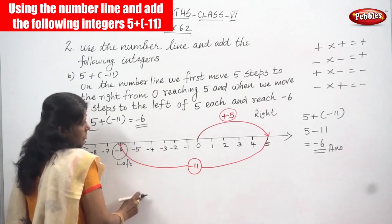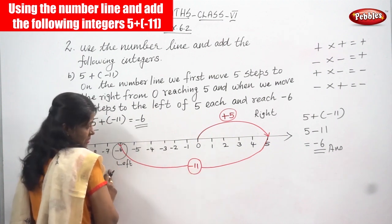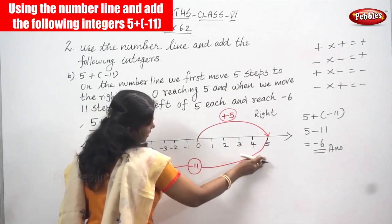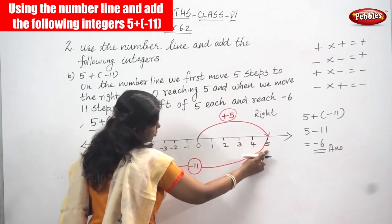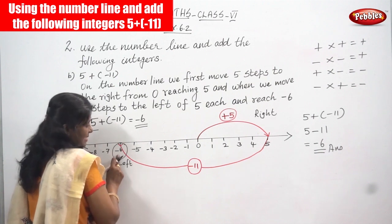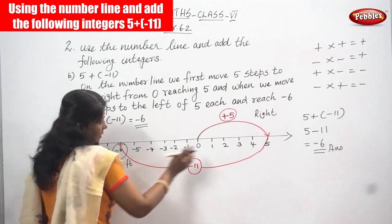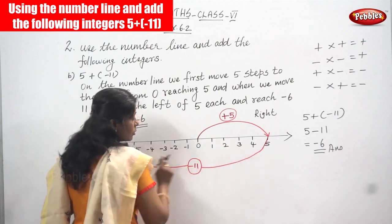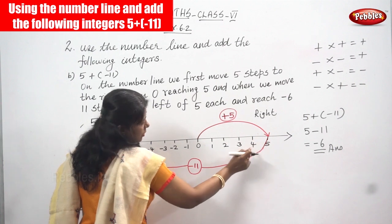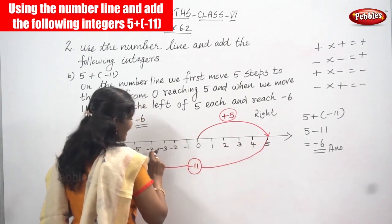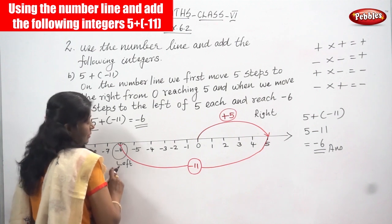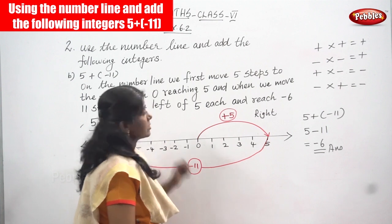So 5 plus minus 11 gives the answer minus 6. To summarize: on the number line, first move 5 steps to the right from 0, reaching 5. Then from 5, move 11 steps to the left: 1, 2, 3, 4, 5, 6, 7, 8, 9, 10, 11 — you reach minus 6. The answer is minus 6. I think you understand the first sum very clearly.